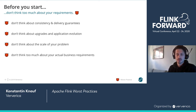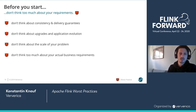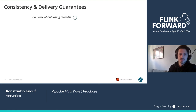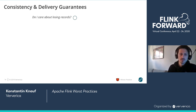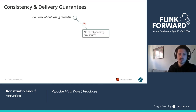And of course, don't think about the actual business requirements. I want to talk about each of these four areas in a bit of detail. When it comes to consistency and delivery guarantees, there are basically three questions you should ask yourself. The first one is: do you care about losing records? If you don't care about that, you don't need checkpointing and you can use any source in Flink — for example a socket source.